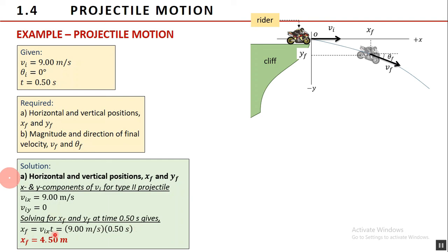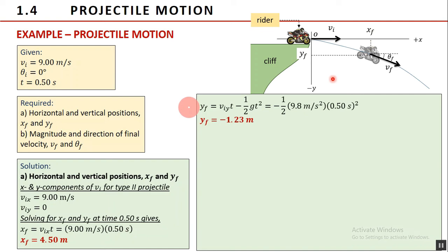Then solving for the position at time 0.5 second. The horizontal position of the rider is x sub f equals the x component of the initial velocity times time t, that is 9 times 0.5, so the answer is 4.5 meters. For vertical position y sub f, we will use one of the freefall formula v sub i y times t minus 1 half g t squared. Substituting the values will give a vertical position of negative 1.23 meter. Remember, this negative sign indicates that the rider is located below the edge of the cliff at 0.5 second. Any questions so far? Can you keep up? Good. Now let's continue.